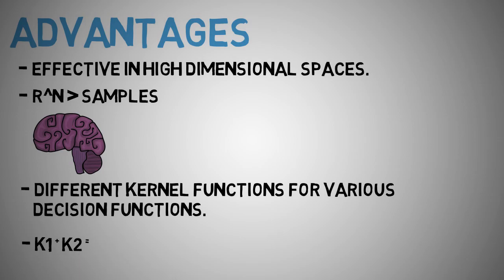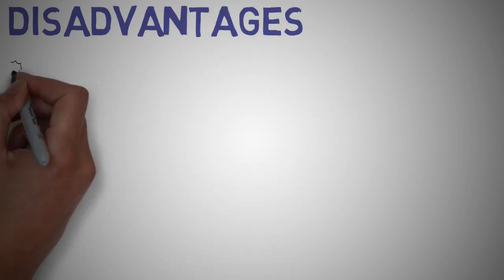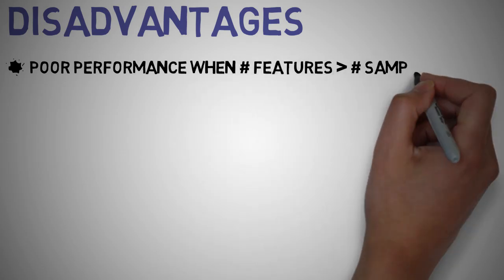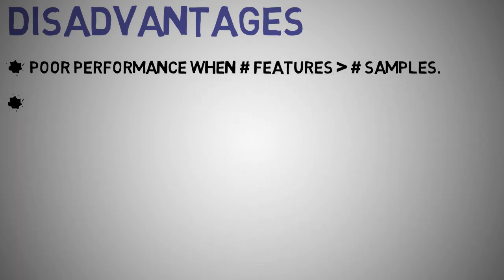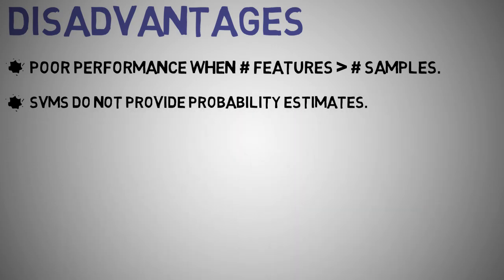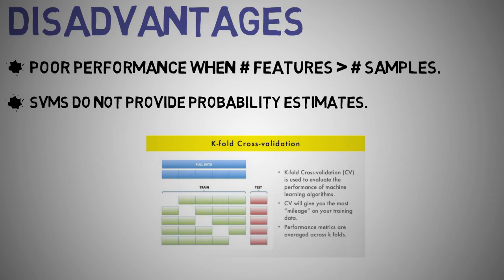The disadvantages, however, of support vector machines include: if the number of features is greater than the number of samples, the method is likely to give poor performance. Support vector machines do not directly provide probability estimates; these are calculated using an expensive five-fold cross-validation.